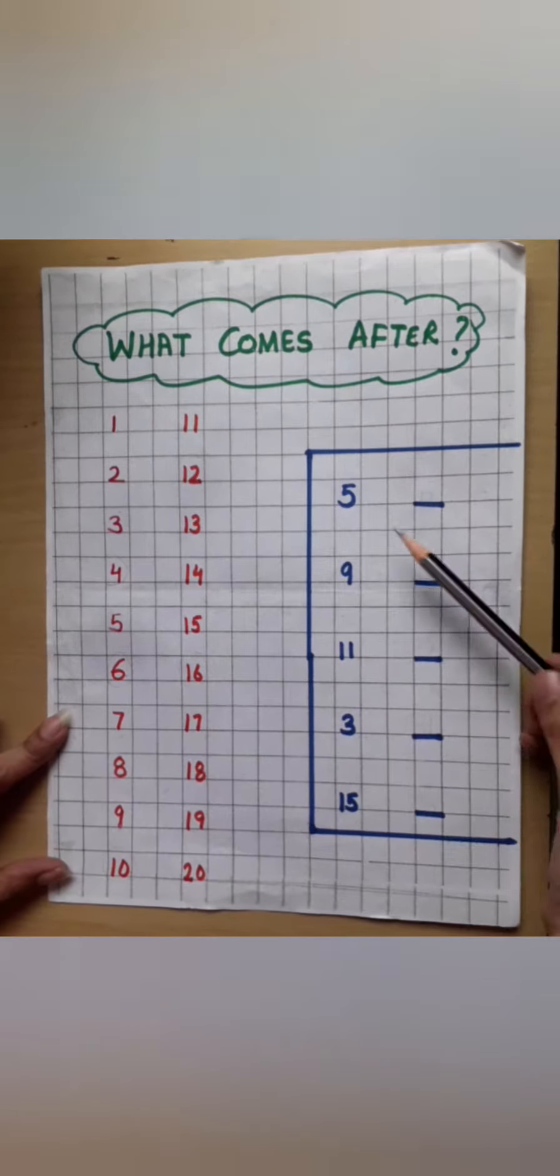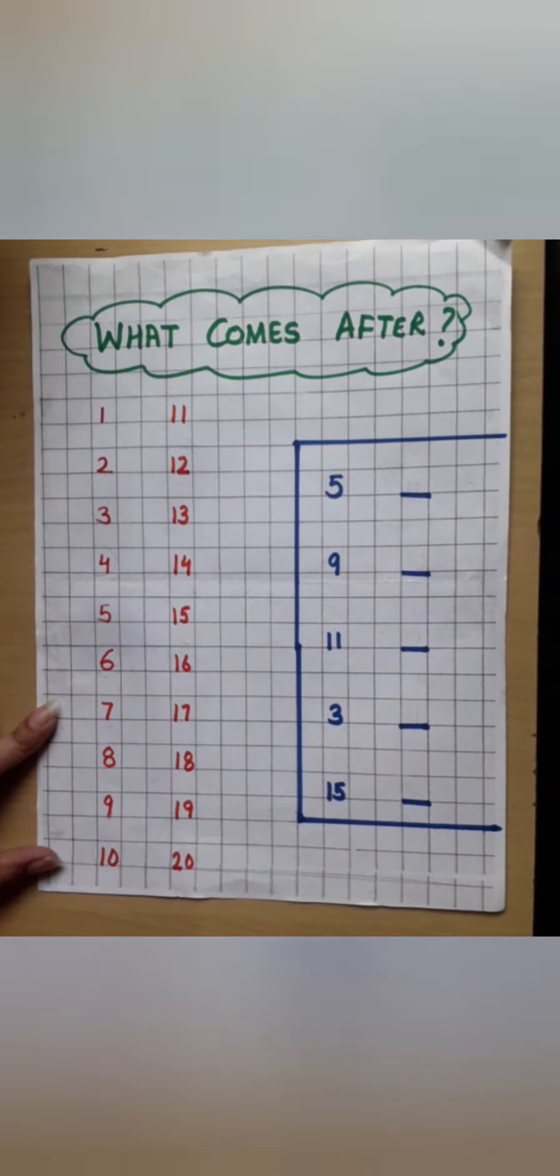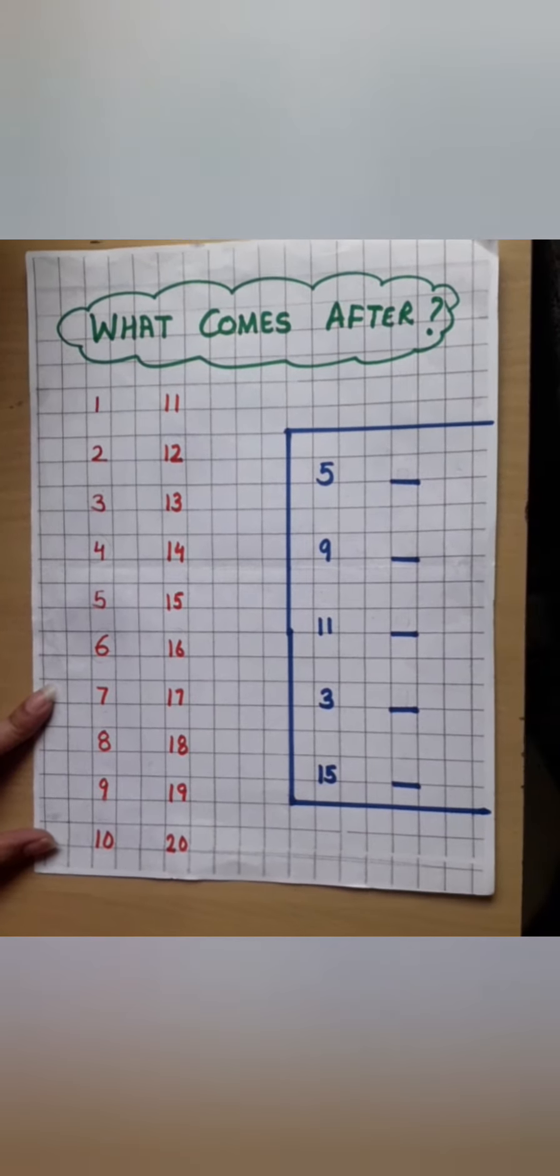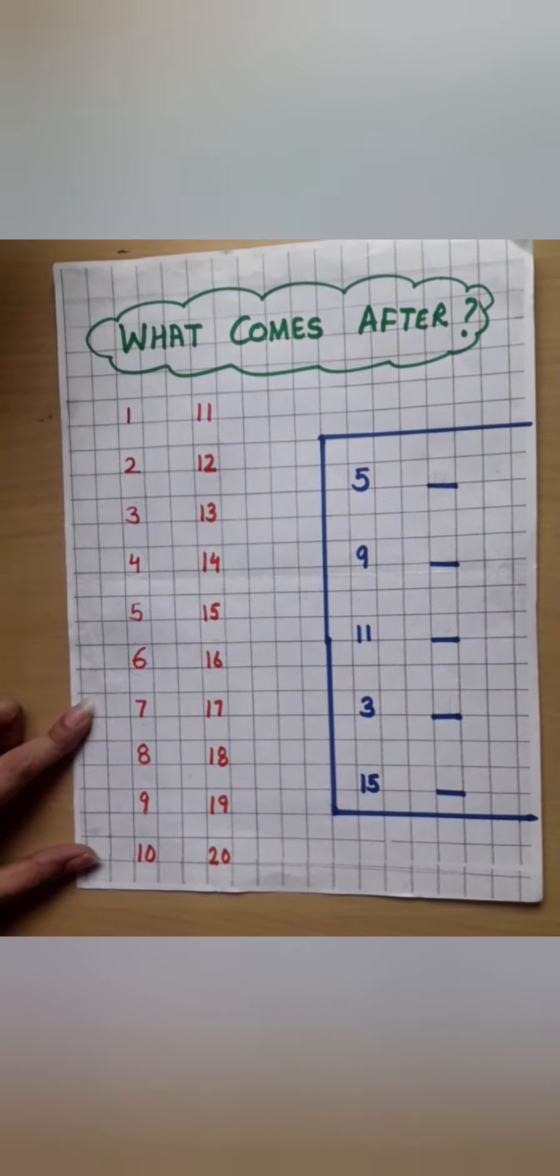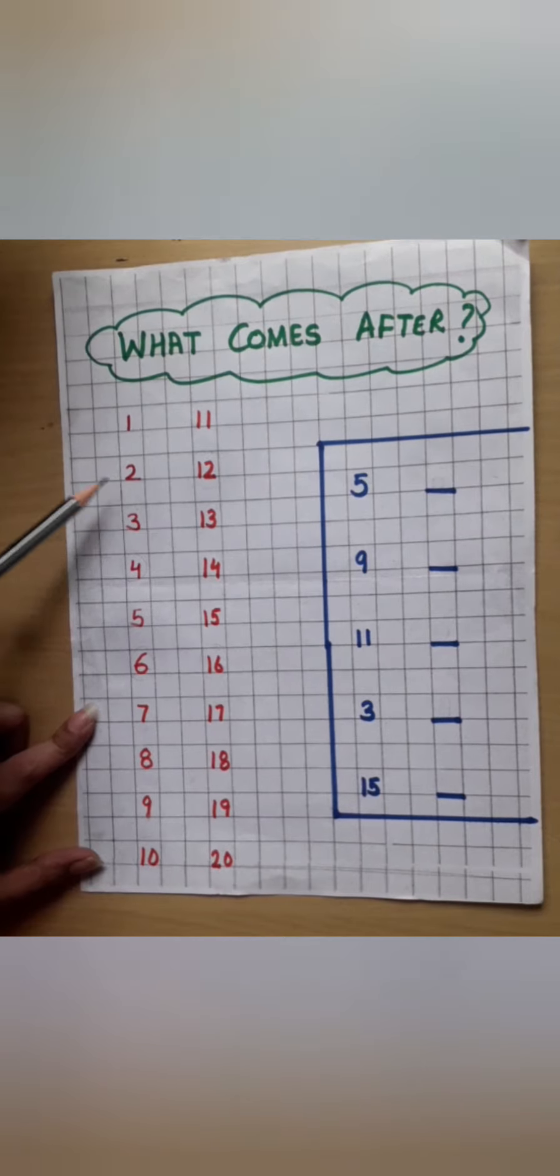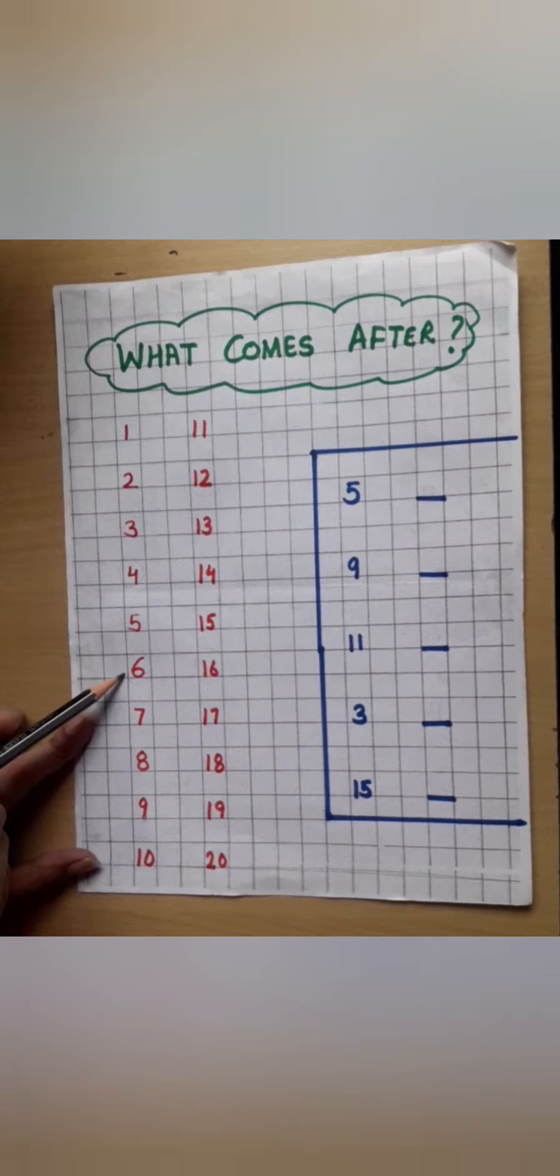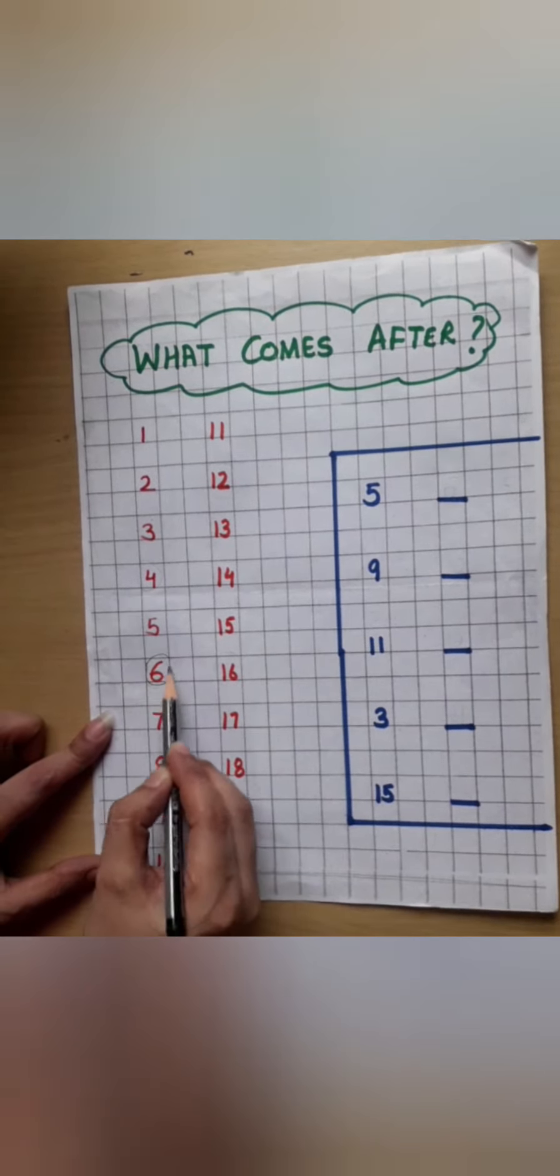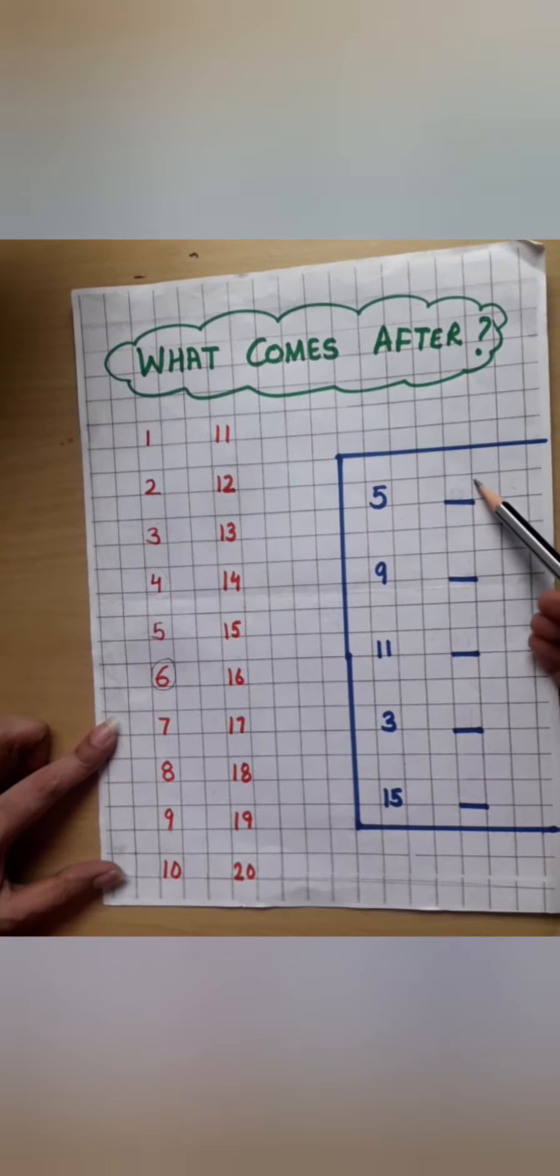So kids, can you tell me this number? Yes, this is the number 5 and tell me what comes after 5. Do you know? No, no. Then what you will do? You will do the counting. So let's do that. 1, 2, 3, 4, 5. What comes after 5? The number 6. Right. Now what you will do? You will write the number 6 here.